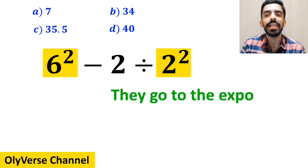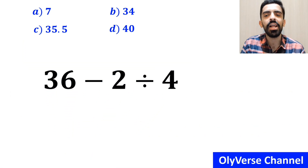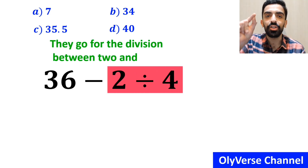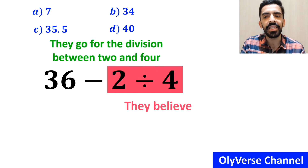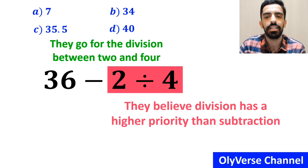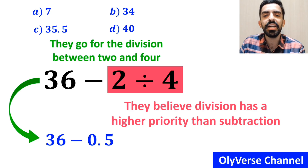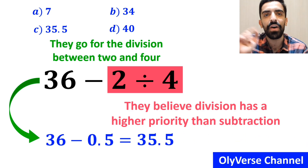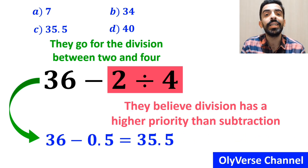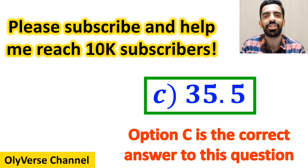Then they go to the exponents and simplify this expression to 36 minus 2 divided by 4. In the final step, they go for the division between 2 and 4 because they believe division has a higher priority than subtraction. So they rewrite this expression as 36 minus 0.5, which finally gives them the answer 35.5. Then they quickly say that option C is the correct answer to this question.